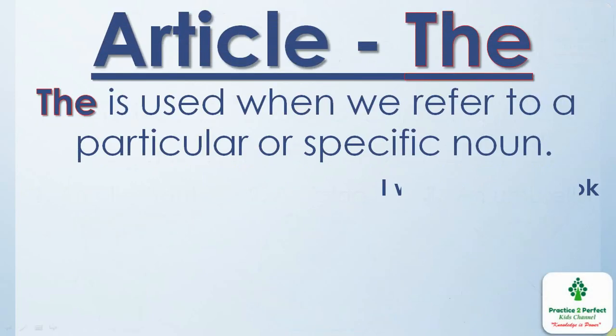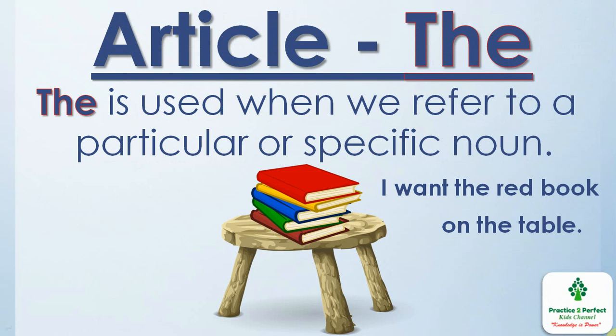Next is the article the. The is used when we refer to a particular or specific noun. Let us see the example. Now there is a table and there are a few books kept on the table. So if I want to talk about a specific book, say the red book, then I will say I want the red book on the table. I have used the before red book because I am referring to the red book in particular.